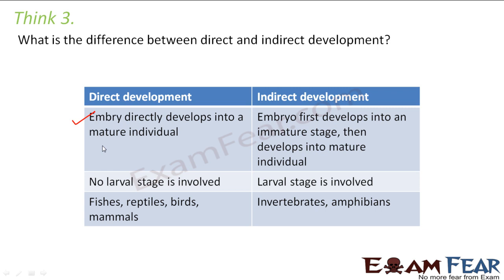In indirect development, the embryo first develops into an immature stage, then develops into a mature individual. For example, in some amphibians they first grow into a larval stage, which exists for a certain period of time and then gradually develops into a mature individual. So no larval stage is involved in direct development, but a larval stage is involved in indirect development. Examples of direct development are fishes, reptiles, birds, and mammals. Indirect development examples are invertebrates and amphibians.